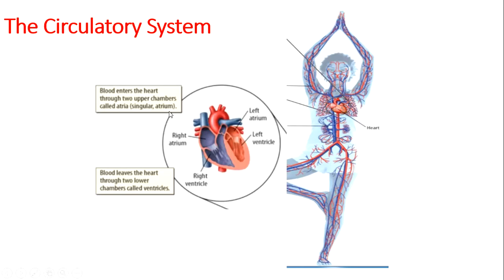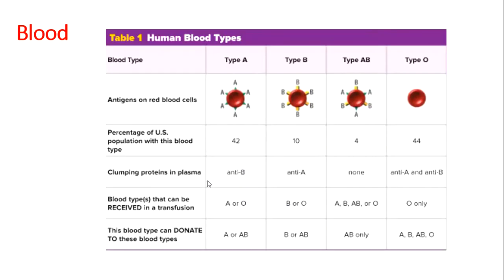Blood enters the heart through two upper chambers called the atria, and it leaves the heart through the lower chambers called the ventricles. The four parts of the heart are the right atrium, left atrium, left ventricle, and right ventricle.